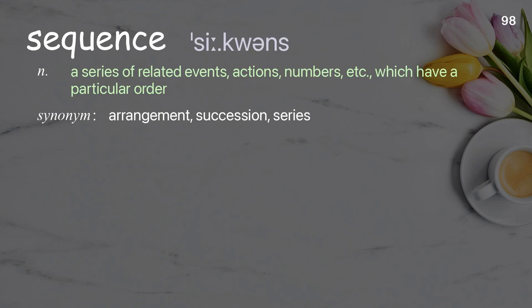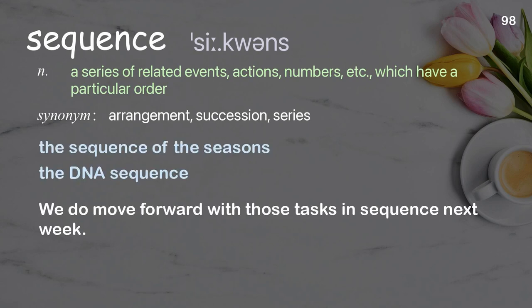Sequence. A series of related events, actions, numbers, etc. which have a particular order. Examples: the sequence of the seasons, the DNA sequence. We do move forward with those tasks in sequence next week.